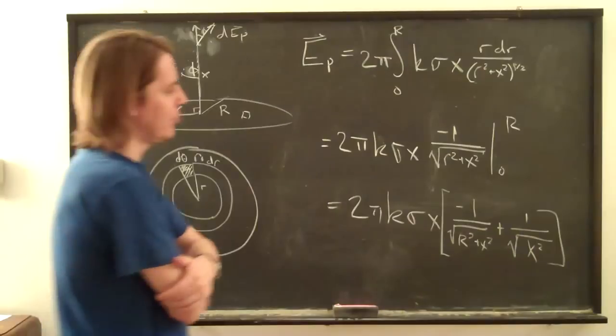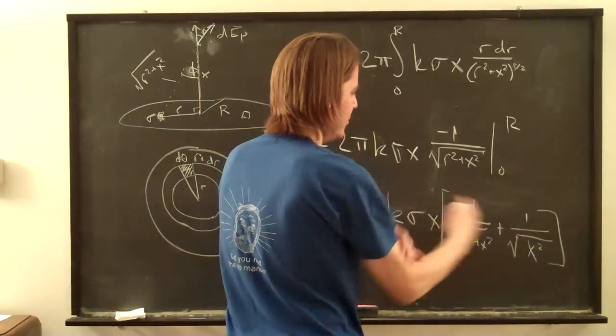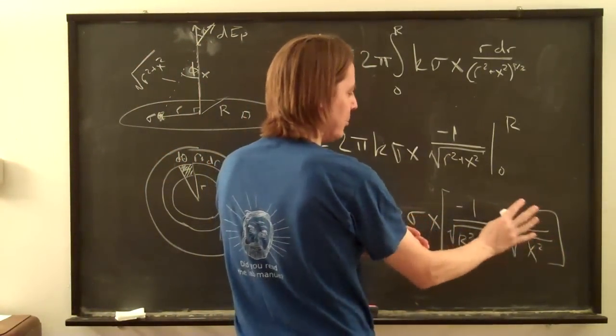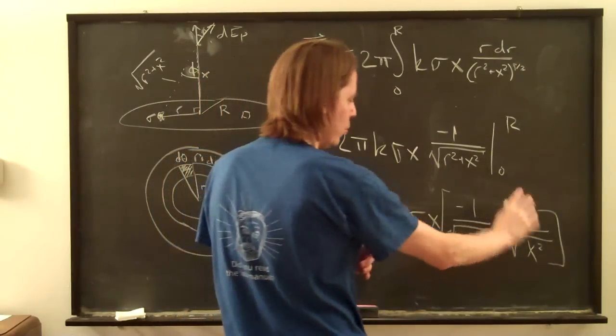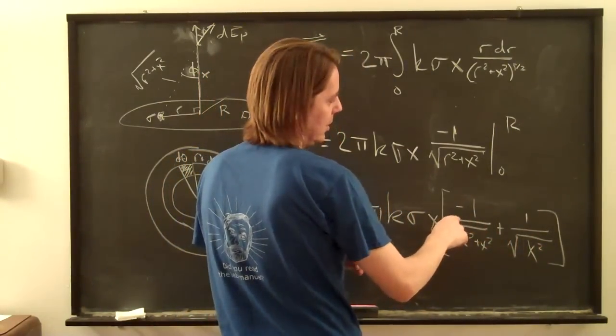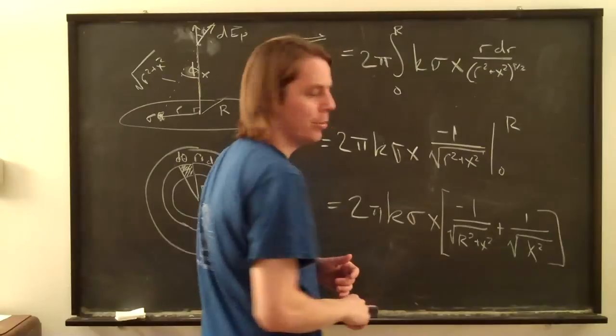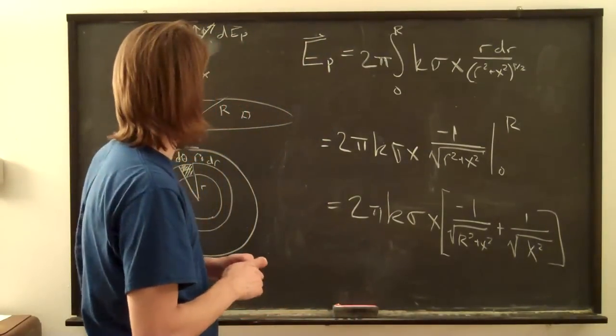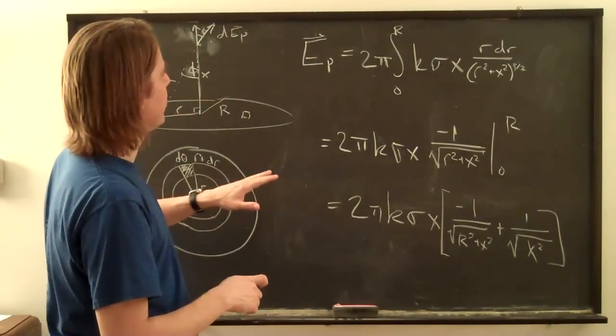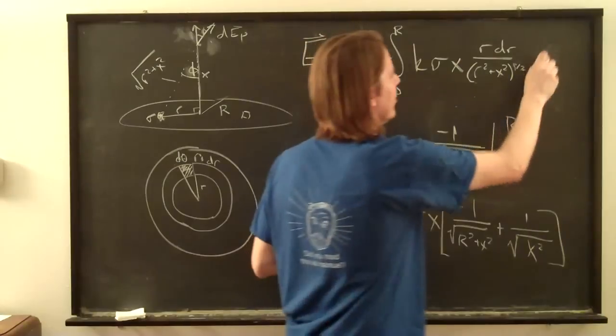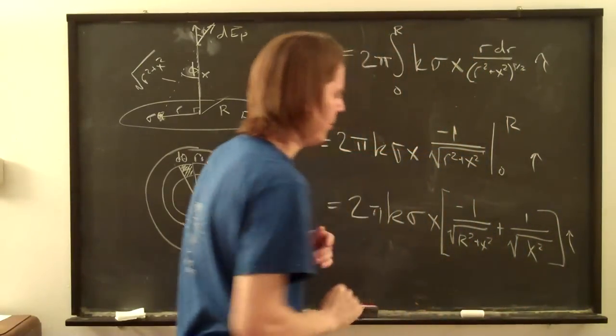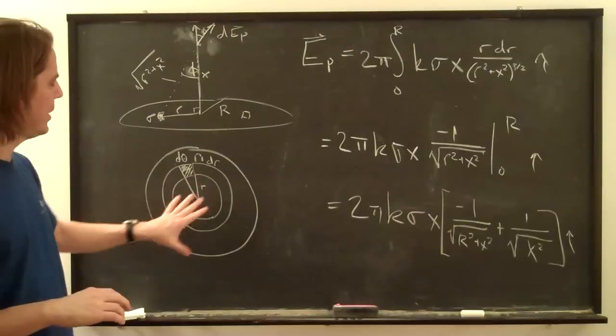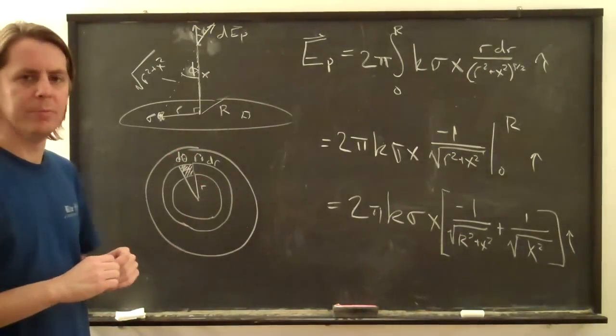The rest of the problem I won't bother to finish. Pretty much you distribute the x, and you find that when you distribute the x, this becomes 1. So the answer is 2 pi k sigma 1 minus x over the square root of R squared plus x squared. Same answer that they get in the book. And I forgot to keep writing it, but we have this in the i hat here. And that's the problem. That's how you do the full problem integrating over an area in polar coordinates.